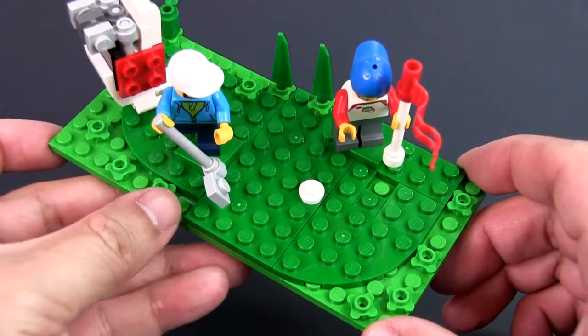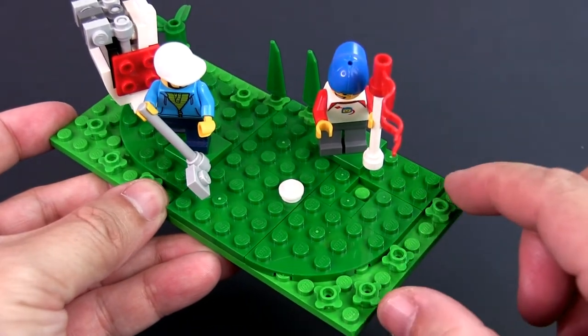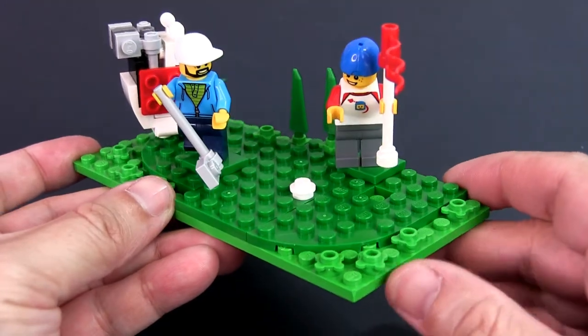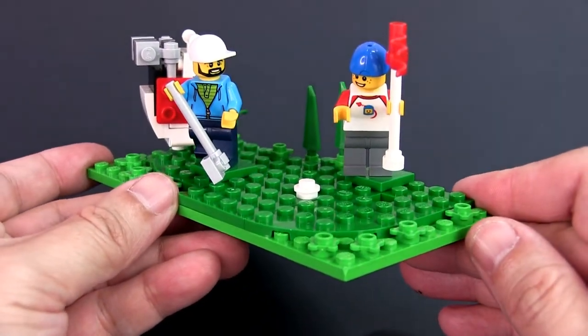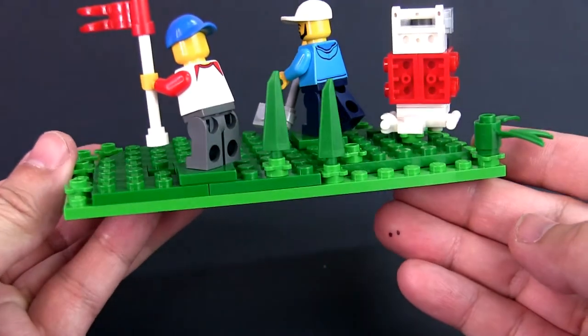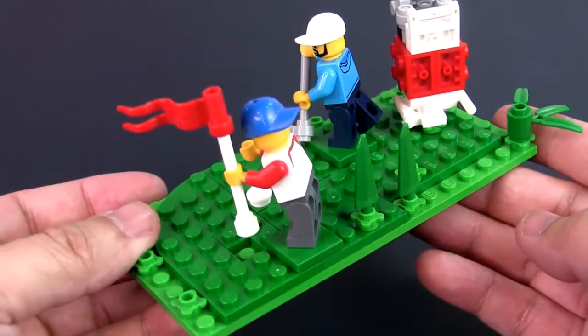Everything is built on an 8x16 light green plate. I added darker green plates of various shapes to create the putting green. The plates were arranged in such a way that there's a hole for the golf ball. I added green flower studs around the green to give it texture as well as other plant elements.